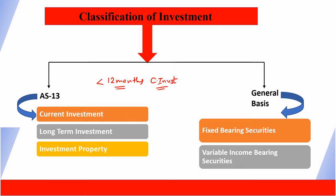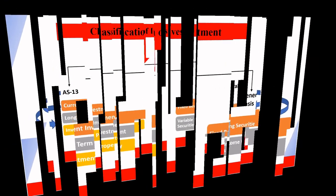If we are holding shares for more than 12 months it is long-term capital gain (LTCG), and if less than 12 months it is short-term capital gain. So current investments are those we will sell within 12 months, and long-term investments are those held beyond 12 months. The third type is investment property. On a general basis, fixed bearing securities give fixed returns while variable income bearing securities give variable returns.